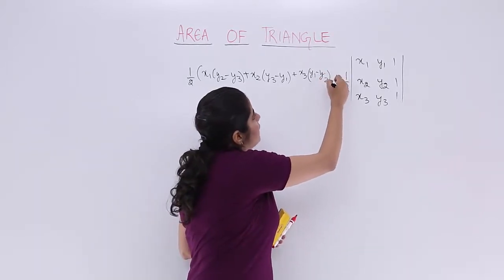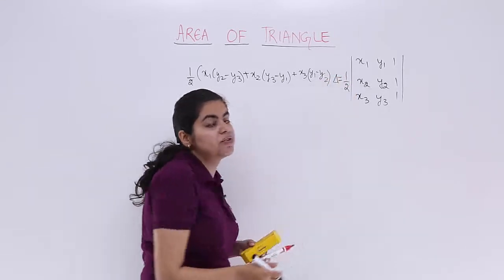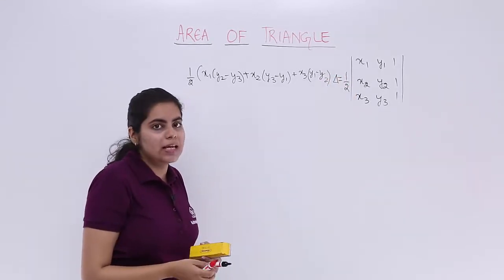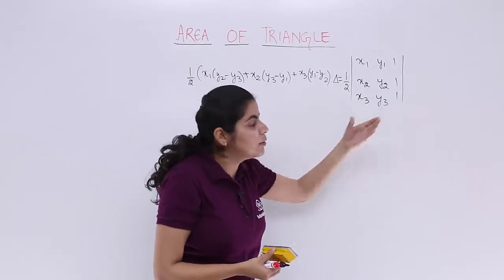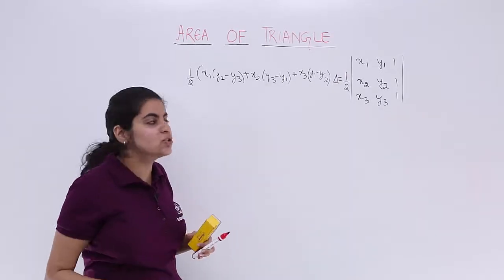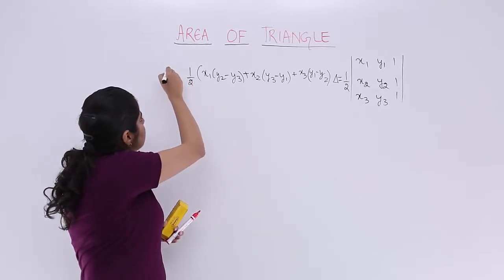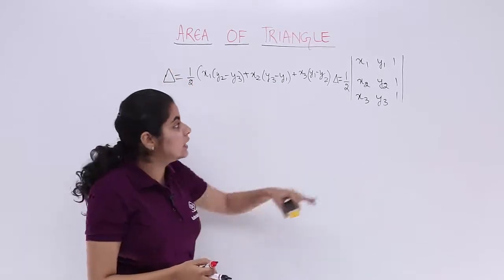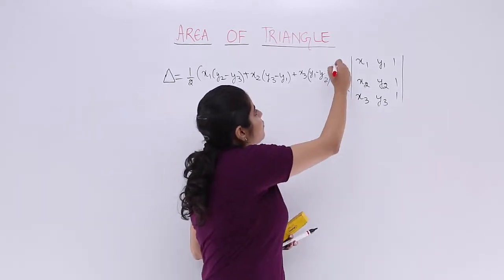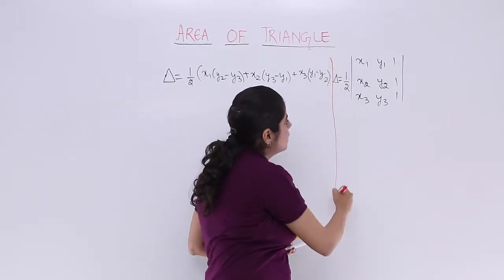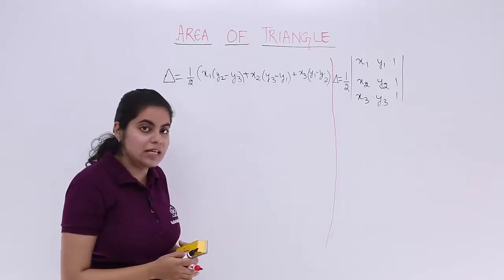This we are going to study in this topic. And you must be surprised that the formula actually is coming from the determinant form only, since in junior classes, you had not studied about the concept of determinants. So this determinant form was not shown to you. But actually, the formula has come with that only and we are going to derive that formula today.